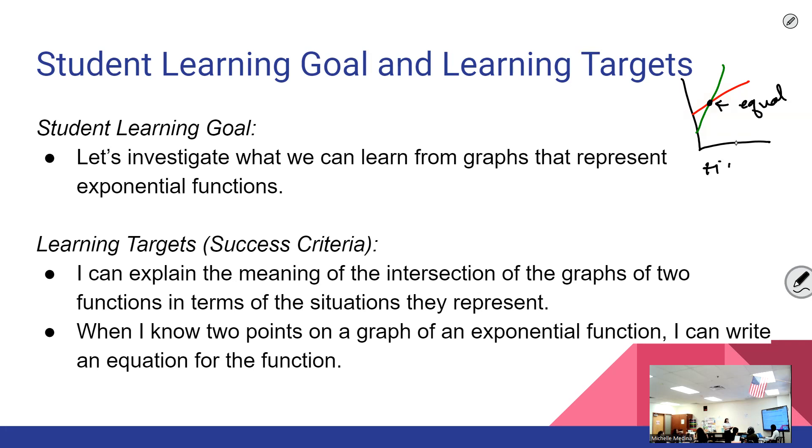If x is supposed to be time and maybe y could be sales, it could be really anything, then at that time frame that they meet at they have the same amount of sales. That's the same for exponentials; it's just now the graphs look different. They're not linear. Where they intersect is where they are equal.